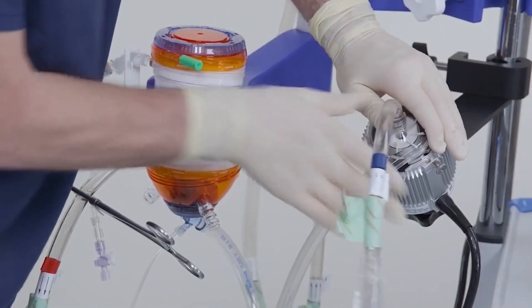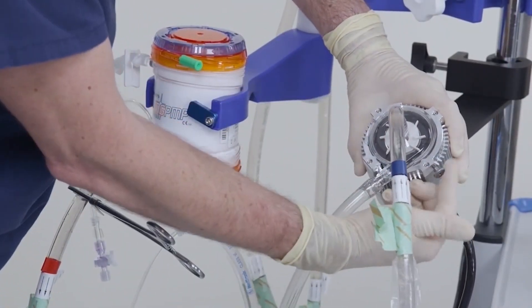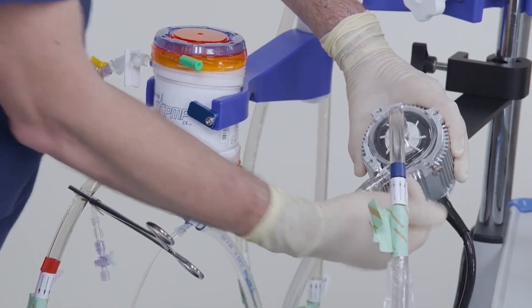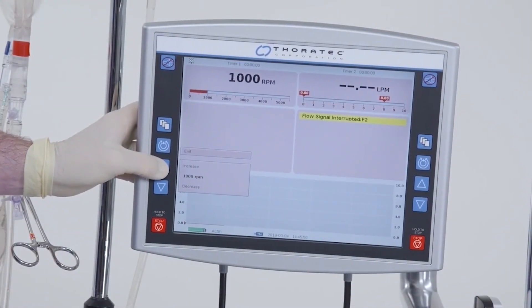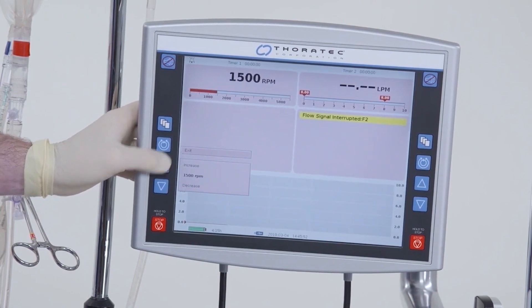Once the pump and tubing are free of air, place the pump back into the motor, securing it with the retaining screw. With the CentraMag console on, initiate flow by increasing the speed to 1500 RPM.